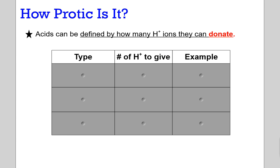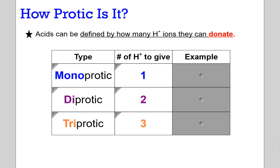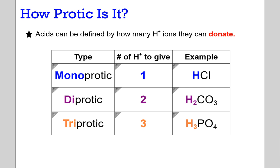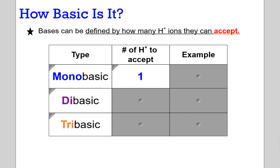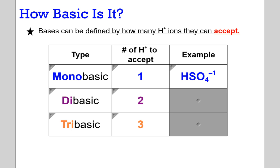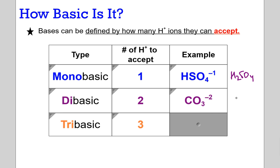We can define acids by how many hydrogen ions they're able to donate — it's just some simple terminology: monoprotic, diprotic, triprotic. An example of a monoprotic acid would be hydrochloric acid — per molecule it can only give one hydrogen. Carbonic acid can give two. Phosphoric acid can give three. Bases can also be defined this way: monobasic, dibasic, tribasic. An example of a monobasic base: hydrogen sulfate can accept one hydrogen and becomes sulfuric acid. A dibasic carbonate ion can gain two and become H₂CO₃. Phosphate ion can gain three and become H₃PO₄.